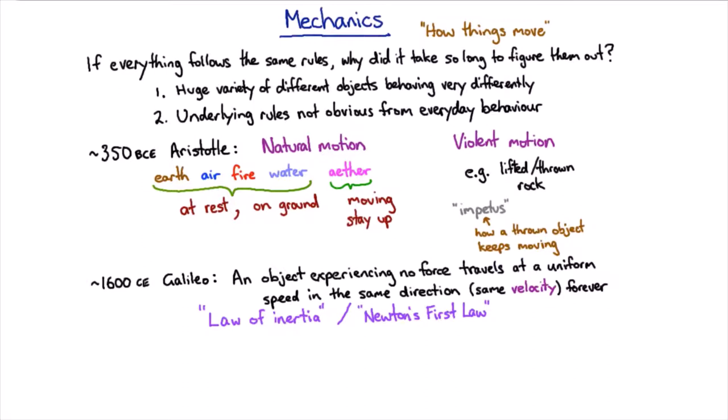In the Aristotelian worldview, a book sliding across a desk comes to rest because that's what books do. Books, like everything else on Earth, should be at rest. In the Galilean and Newtonian point of view, a book sliding across a table stops because there's friction.